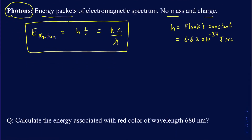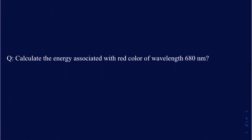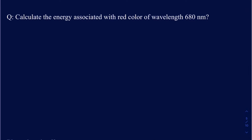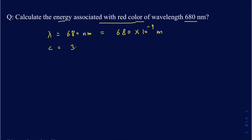Let's go ahead and use this equation to solve a problem. It's asking us to calculate the energy associated with red light that has a wavelength of 680 nanometers. The wavelength is 680 nanometers — remember, we have to convert that to SI units by removing the nano prefix and multiplying by 10 to the negative 9. We also know the speed of light is 3.0 times 10 to the 8 meters per second.